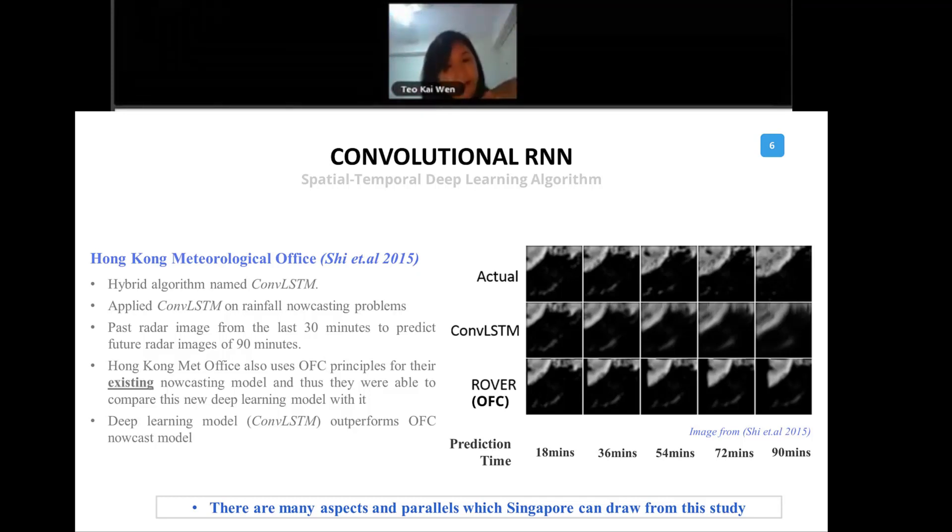The other area that has significant advancement is the recurrent neural network. This is the algorithm, the backbone behind, for example, Google Translate and speech recognition. It's actually very good in predicting sequential kind of stuff. There are significant advancements in these two areas.